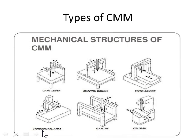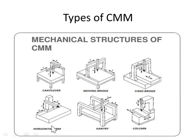The fourth type is called the horizontal arm type. You have a horizontal arm here. This type of CMM is used to find the surface profile of cars. If you want to measure the surface of a car, it is quite difficult with the previous three CMM types, but with the horizontal arm we can easily measure the surface profile.